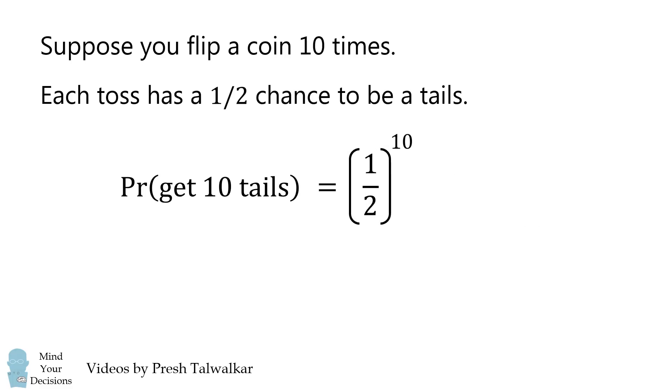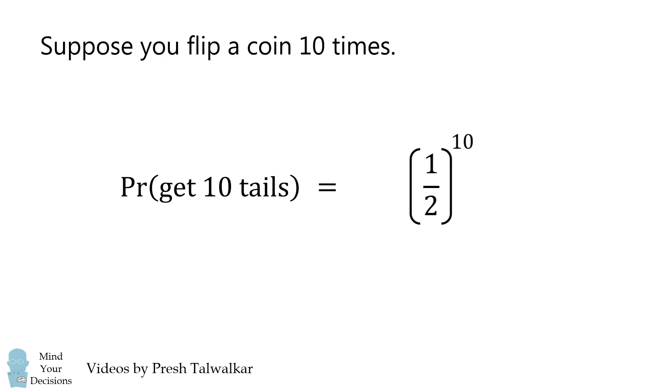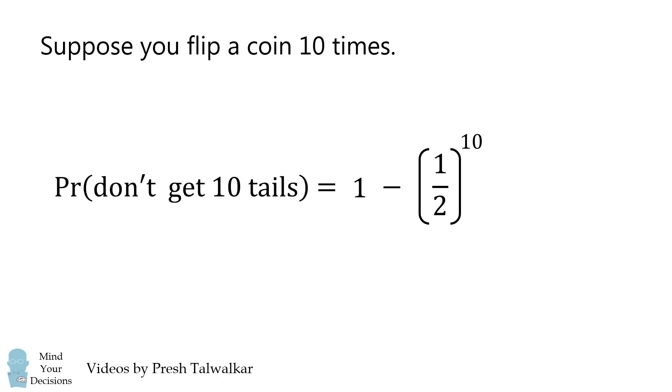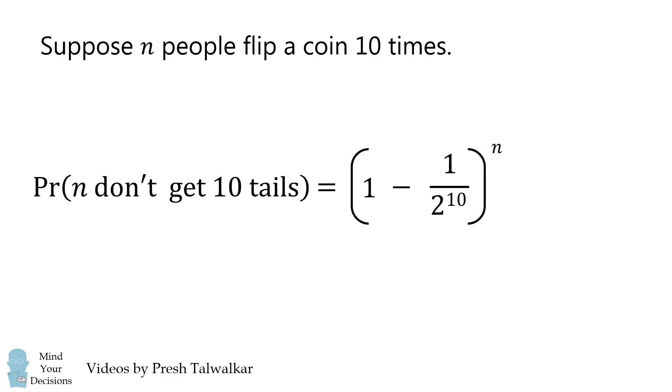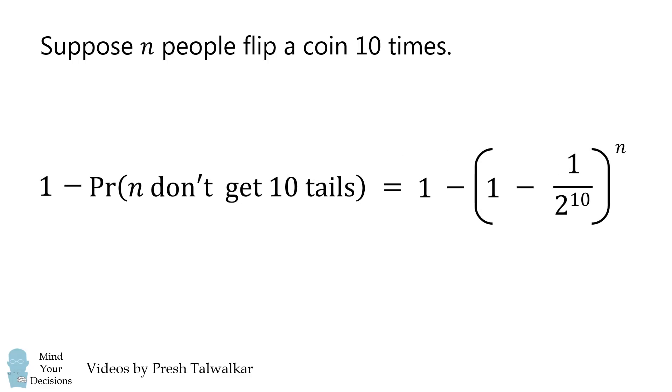We'll then consider the complement event, which is 1 minus this event. This will give you the probability that you don't get 10 tails in a row. Now, let's simplify this fraction, and then we're going to consider this event for n people. Each of n people has the same probability, so the probability that n people don't get 10 tails will be this probability raised to the power of n. We then consider the complement event, and that will be equal to the probability that someone in n gets 10 tails.